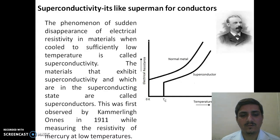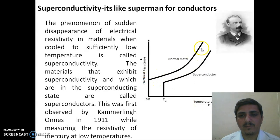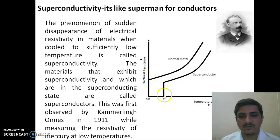This phenomenon was first observed by Kamerlingh Onnes in 1911 when he was measuring the resistivity of mercury at low temperatures. As can be seen in this graph, when temperature is taken on the x-axis and electrical resistance on the y-axis, normal metals show decreasing resistivity as temperature is reduced. But in superconductors, with the decrease in temperature, at a certain temperature called the critical temperature, the resistance drops suddenly and reduces to zero.